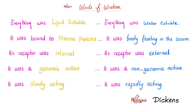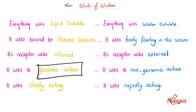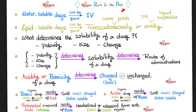For lipid soluble medications: genomic action, slowly acting, receptor internal. For water soluble medications: non-genomic action, rapidly acting, receptor external. The genomic action occurs because when you are lipid soluble, your receptor is sometimes in the nucleus — and the nucleus has DNA and genes. This means if you are a water soluble medication, you can be given intravenously because your blood is water and the drug is water soluble. But if the medication is lipid soluble, it cannot be given intravenously — instead, we can put it on your skin or give it orally.